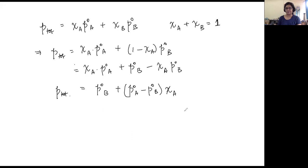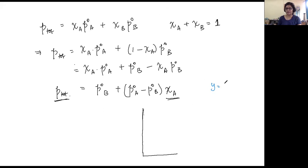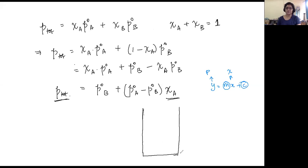From the mathematical equation, what would the graph of total vapor pressure versus concentration look like? It will be a straight line — linear — because the equation resembles Y = MX + C, where Y is total vapor pressure, X is mole fraction, M is a constant (pure vapor pressures are constants), and C is also a constant. So the graph is a straight line.